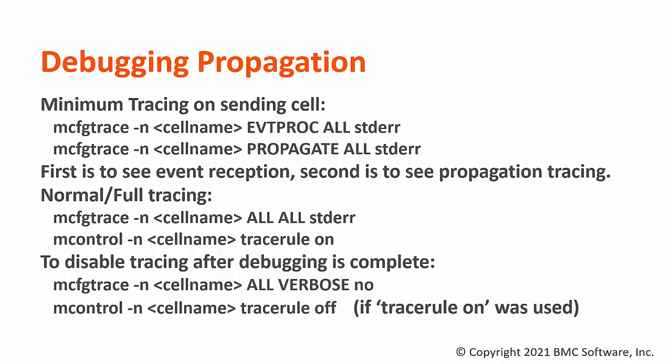You could also choose to enable full tracing as shown here, with a combination of all standard error tracing as well as enabling rule tracing via the mControl command. After troubleshooting, tracing can be disabled by resetting the trace level using 'all verbose no' via the mConfig trace command, and disabling trace rule as shown if it had been enabled.